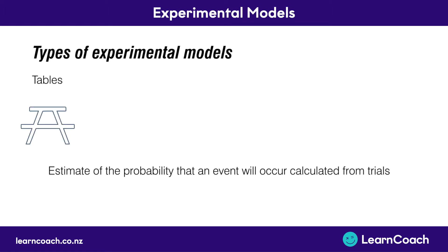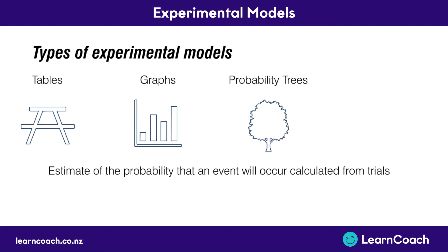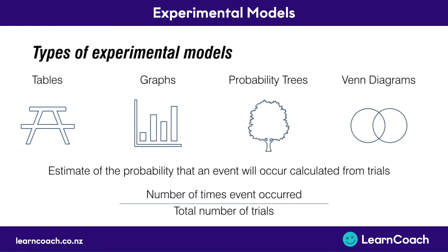Our types of models are tables, graphs, probability trees, and Venn diagrams. Most importantly, this is our formula: the number of times the event has occurred divided by the total number of trials.